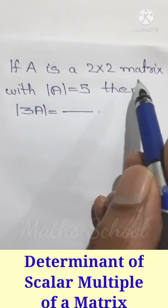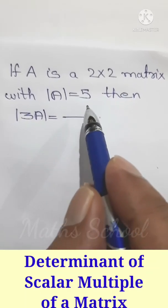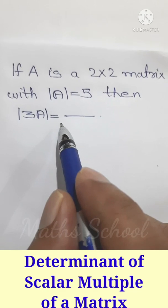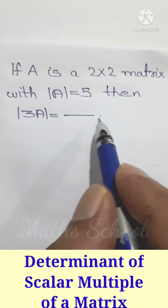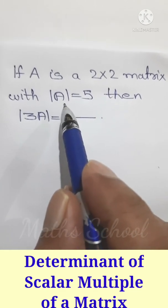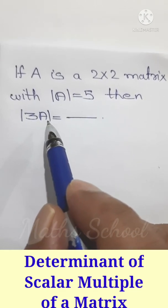If A is a 2 by 2 matrix with determinant of A equal to 5, then determinant of 3A equals what? With the determinant of A given, determinant of 3A is a constant we need to find.